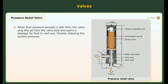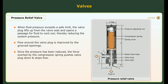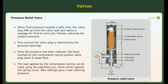Pressure relief valve. When fluid pressure exceeds a safe limit, the valve plug lifts up from the valve seat and opens a passage for the fluid to vent out, thereby reducing the system pressure. Flow around the valve plug is improved by the grooved openings. Once the pressure has been reduced, the force exerted by the compression spring pushes the valve plug down and stops the flow. The load applied by the compression spring can be reset using the adjusting nut, which works against the spring cover. New settings give a new relieving pressure.